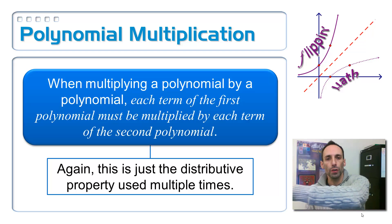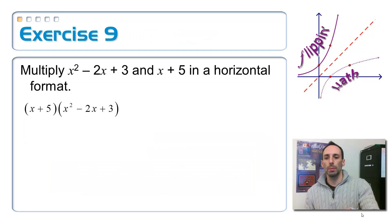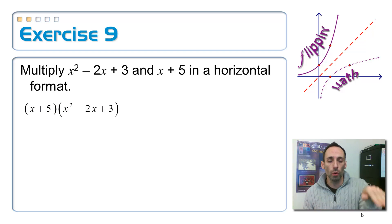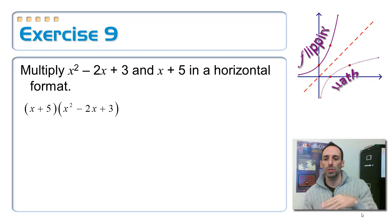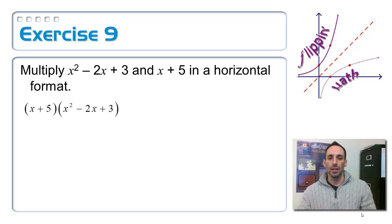You distribute everything from the first set of parentheses to everything in the second set. So for example, here I have a binomial multiplying times a trinomial. Doing this in a horizontal format, I'm going to distribute the x to everything in the second set of parentheses, and then distribute the positive 5 to everything in the second set of parentheses, and then combine like terms.